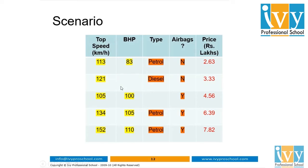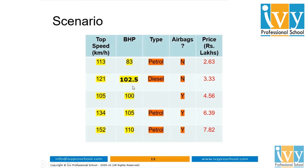BHP contains one missing value and type contains one missing value. We can either delete this one record since it is minor — one out of five — or alternatively we can replace the missing value with imputed values. This process is called imputation. Since BHP is a continuous column, we replace the missing value with the median of all non-null values, which is 102.5. The missing value in the type column is replaced by the mode, which is 'petrol', since petrol occurs three times whereas diesel occurred only once.